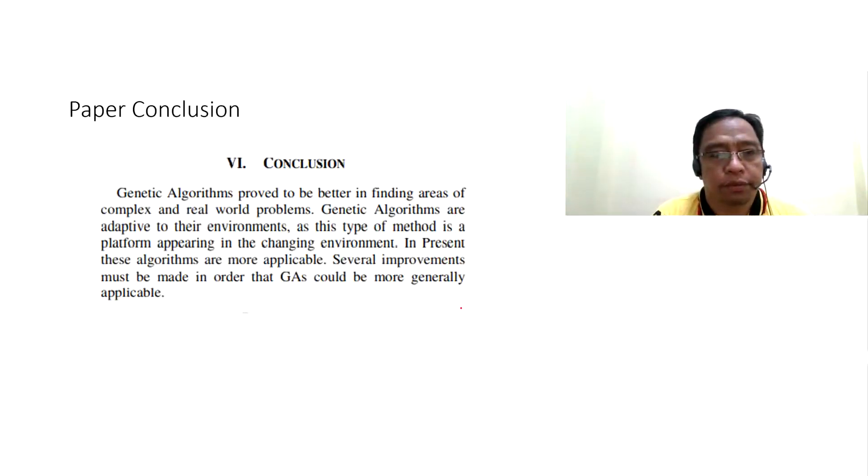Now, for the conclusion. Genetic algorithms prove to be better in finding areas of complex and real-world problems. Genetic algorithms are adaptive to their environments as this type of method is a platform appearing in the changing environment. In the present, these algorithms are more applicable. Several improvements must be made in order that GAs could be more generally applicable.